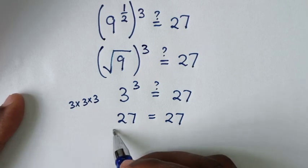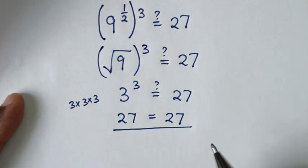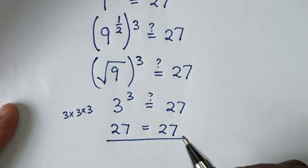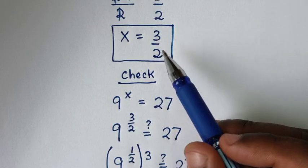Now left side and right side are equal, then it is true for the value of x, it is this 3 over 2.